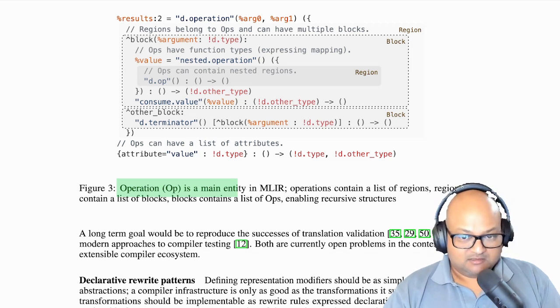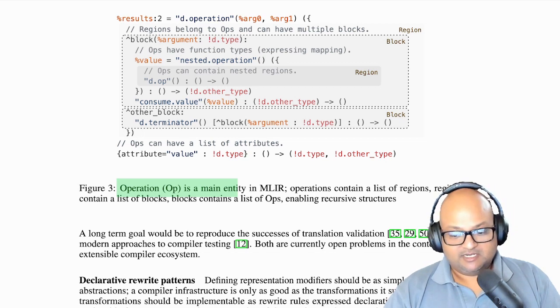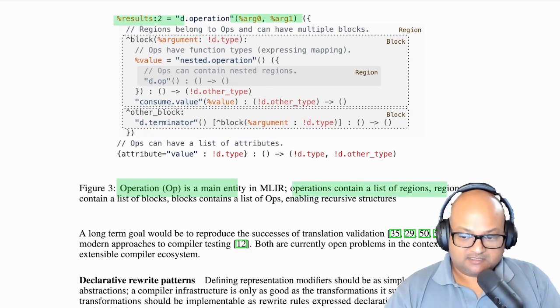are modeled as ops. Now the cool thing is that MLIR allows and in fact encourages users to define their own custom ops. And most compiler passes will treat custom ops that they don't yet understand very conservatively. Not surprisingly, ops can have arguments or operands as well as results. And they can also be recursively nested.